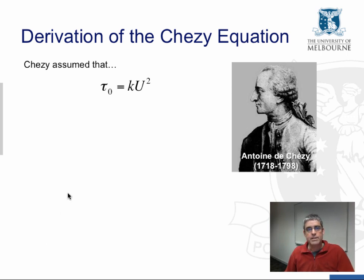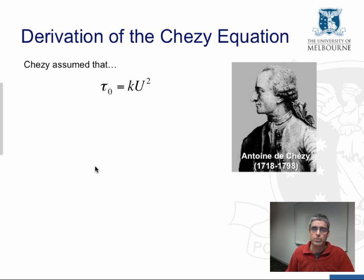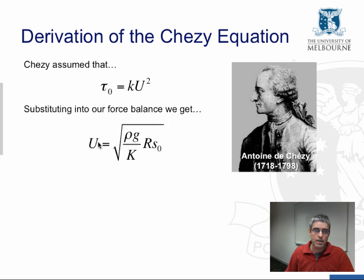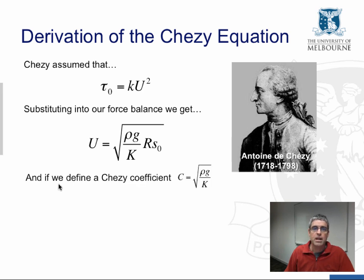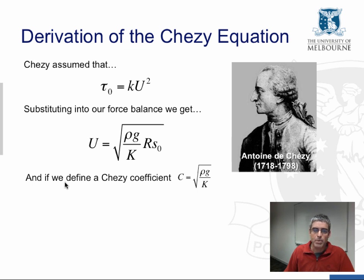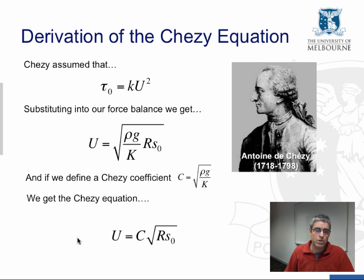Chezy assumed that the shear stress was proportional to the flow velocity squared — it's common in fluids that frictional forces are proportional to velocity squared. Substituting that into our force balance and defining a coefficient — which has become known as the Chezy coefficient — as the square root of density times gravitational acceleration divided by the constant of proportionality k, we get the Chezy equation: flow velocity equals the Chezy coefficient times the square root of hydraulic radius times channel gradient.